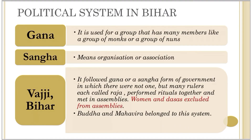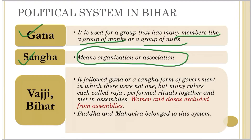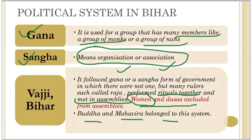Parallel to Magadha, there was another political system in Bihar called the Gana or Sangha system. A Gana is a group with many members, like a group of monks or nuns. A Sangha means an organization or association. In Vajji in Bihar, a Gana-Sangha form of government was followed - there were not one but many rulers, each called Raja. They performed rituals together, met in assemblies to discuss important issues, though women and slaves were excluded from these assemblies. Buddha and Mahavira both belonged to this system of governance.